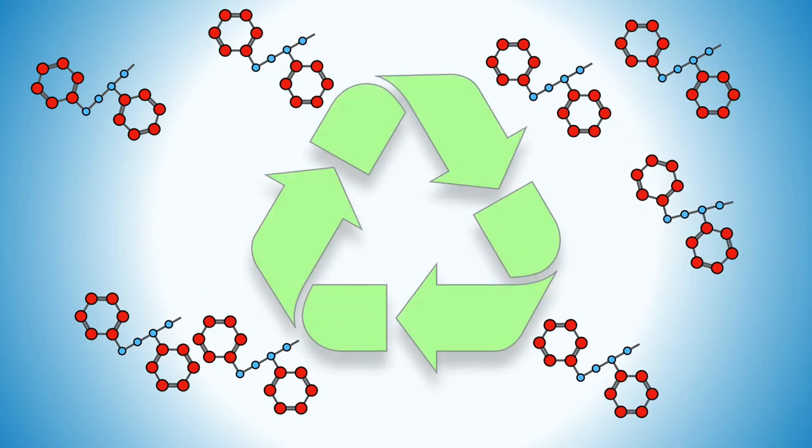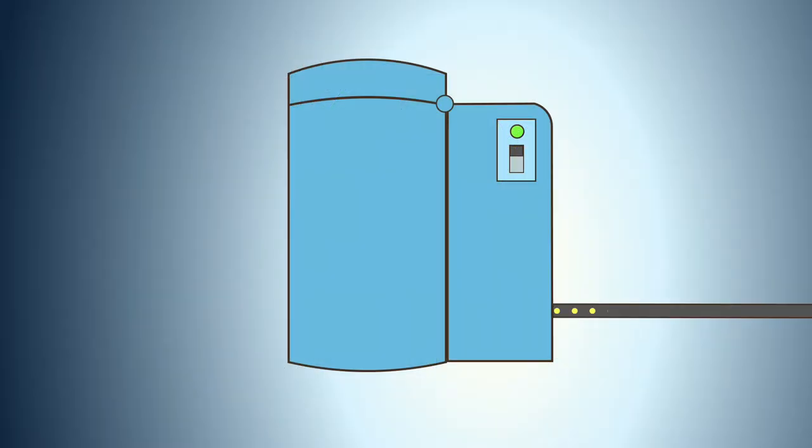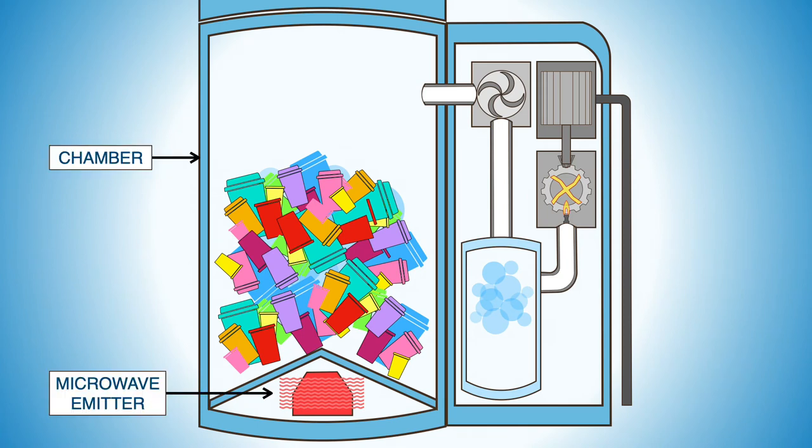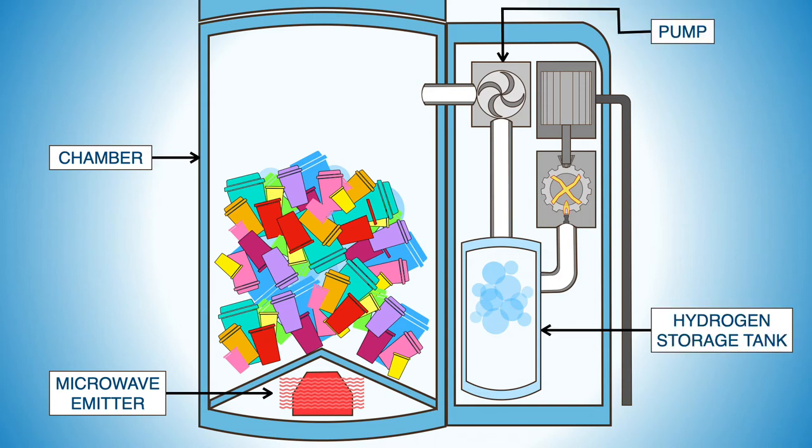We could recycle waste at a molecular level and use the output to generate electric power. The main components are a gas-tight waste containment chamber with a solid-state microwave heating unit, a pump and hydrogen storage tank, and a sterling heat engine coupled to an electric generator.